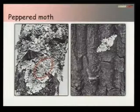There's a selection for the dark form over the light form, so you get a change in distribution, a change in frequency of the two different forms, which can be interpreted as a change in gene frequency driven by natural selection.